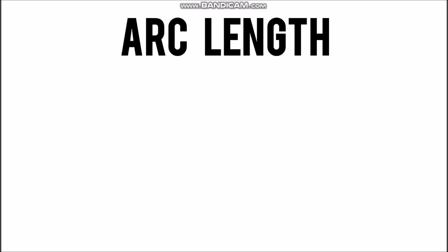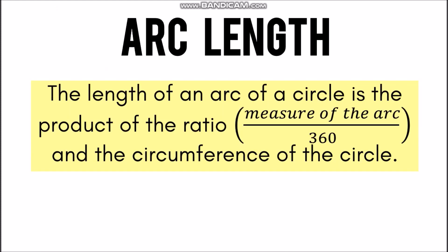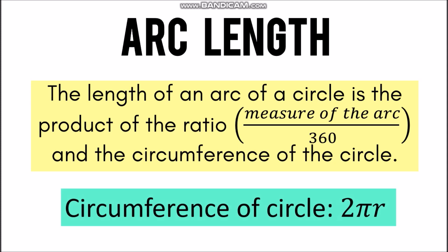Now how do we solve for the arc length? The arc length of an arc of a circle is the product of the ratio — which is the measure of the arc over 360 — and the measure of the circumference. So you multiply the measure of the arc over 360 degrees by the circumference of the circle, and the circumference is solved using 2πr.